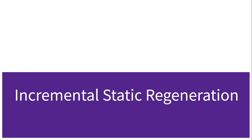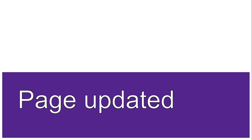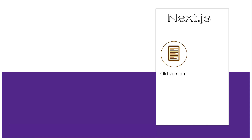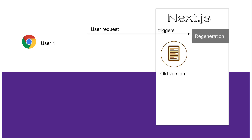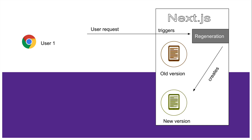This feature was released in Next.js 9.5 and it's really amazing. So let's say you update the page — Next.js would have already got all of the data from the backend, performed the query, got all of the data, and generated the page at build time, meaning it has the old version. Once you update the page and a user request comes in, it's going to trigger a regeneration of the page. Next.js creates a new version of the page with updated data in the background.